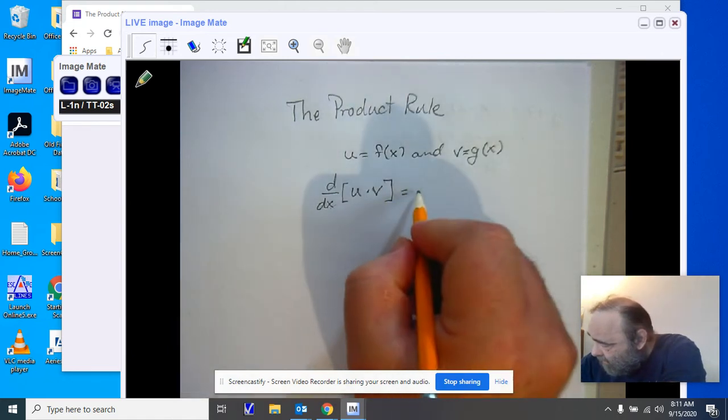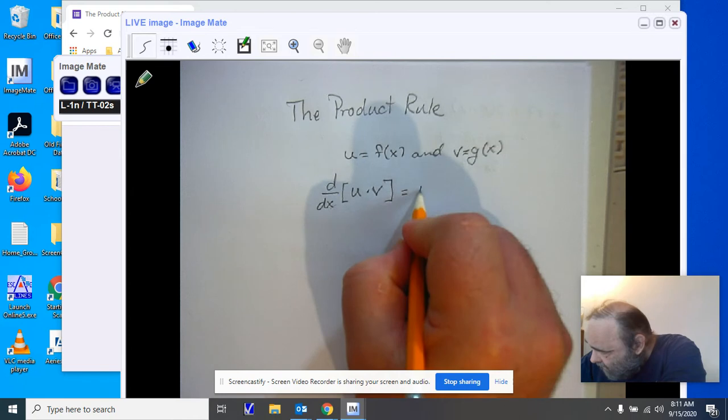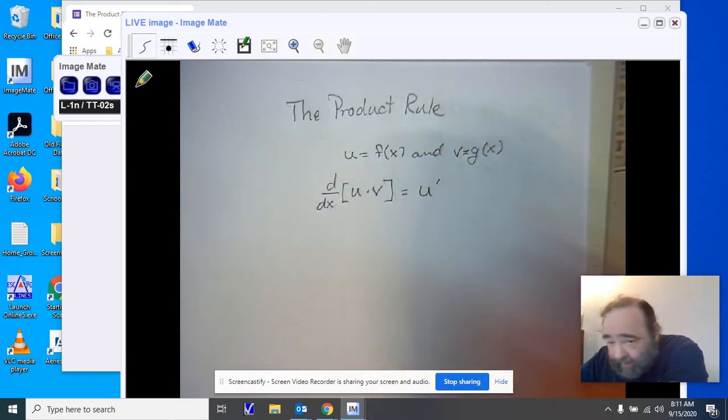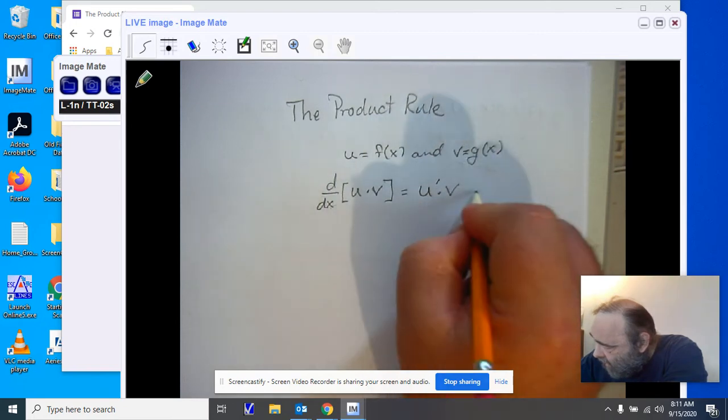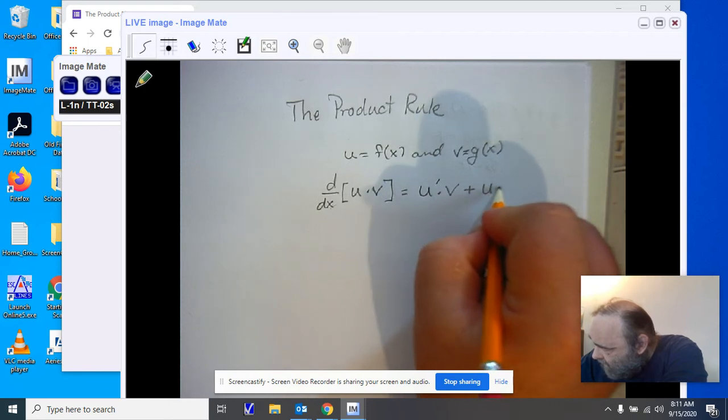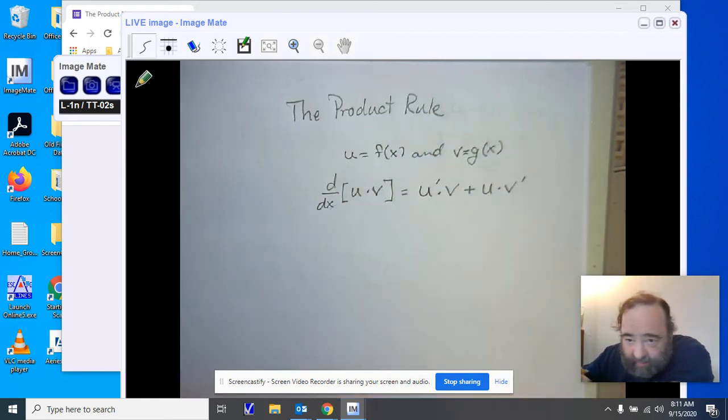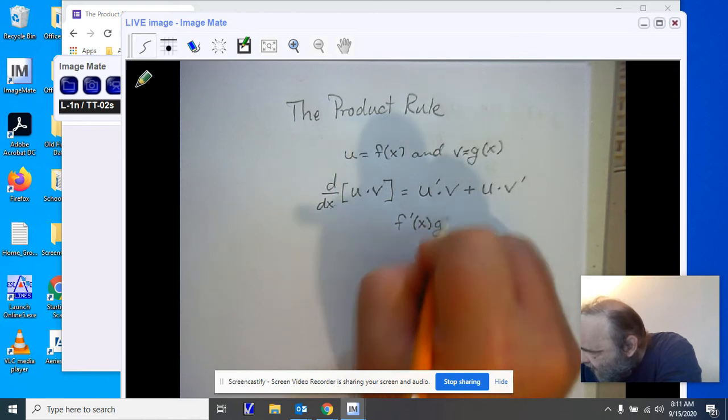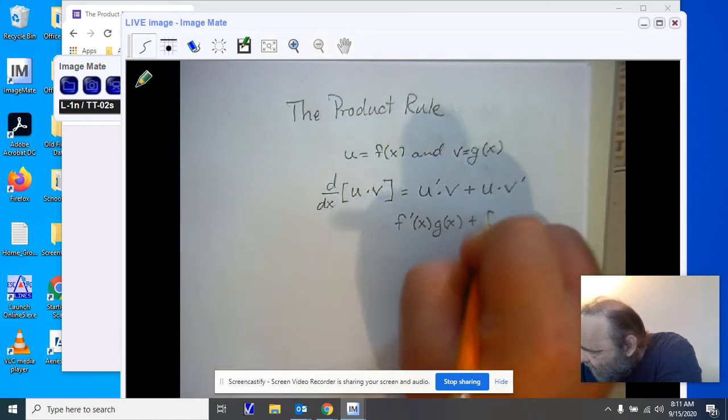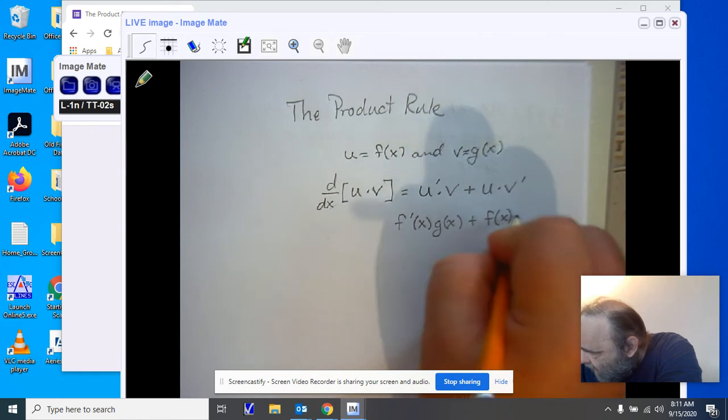So you'll notice I'm going to do this in terms of the first one, that's the derivative of u, times the second one, plus the first one times the derivative of the second. In terms of the f and g, that would be f prime of x g of x plus f of x times g prime of x.